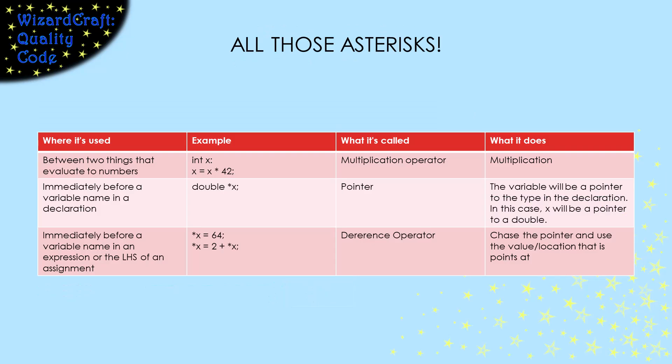I think the C language designers only had asterisk as a special character. They use it for so many things. If you see an asterisk between two numbers, it means multiply. If you see it immediately before a variable name in a declaration, that means that we're declaring a pointer. If you see it immediately before a variable name in an expression or in the left-hand side of an assignment statement, then it is the dereference operator.